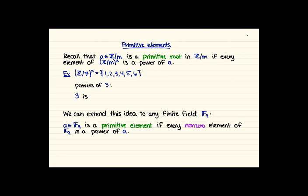For example, if we're looking at Z mod 7 cross, so remember the multiplicative group we're taking things that are relatively prime to 7, so we've got 1, 2, 3, 4, 5, 6 there for this one. And then looking at powers of 3, we want to see if we're getting everything in the multiplicative group as a power of 3.